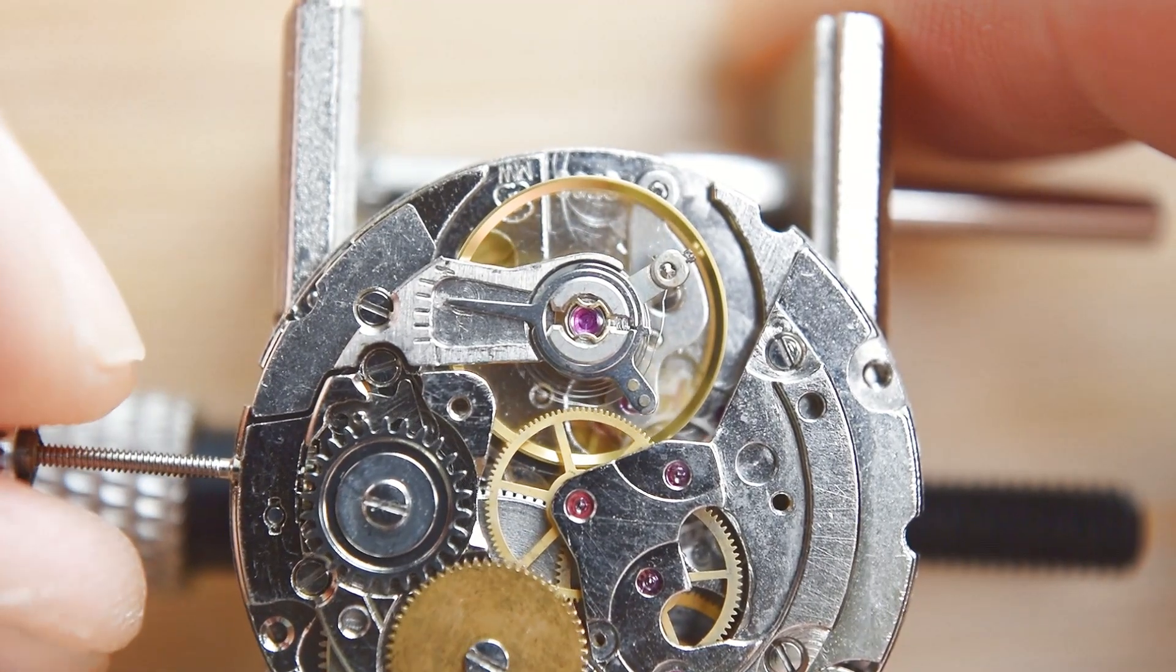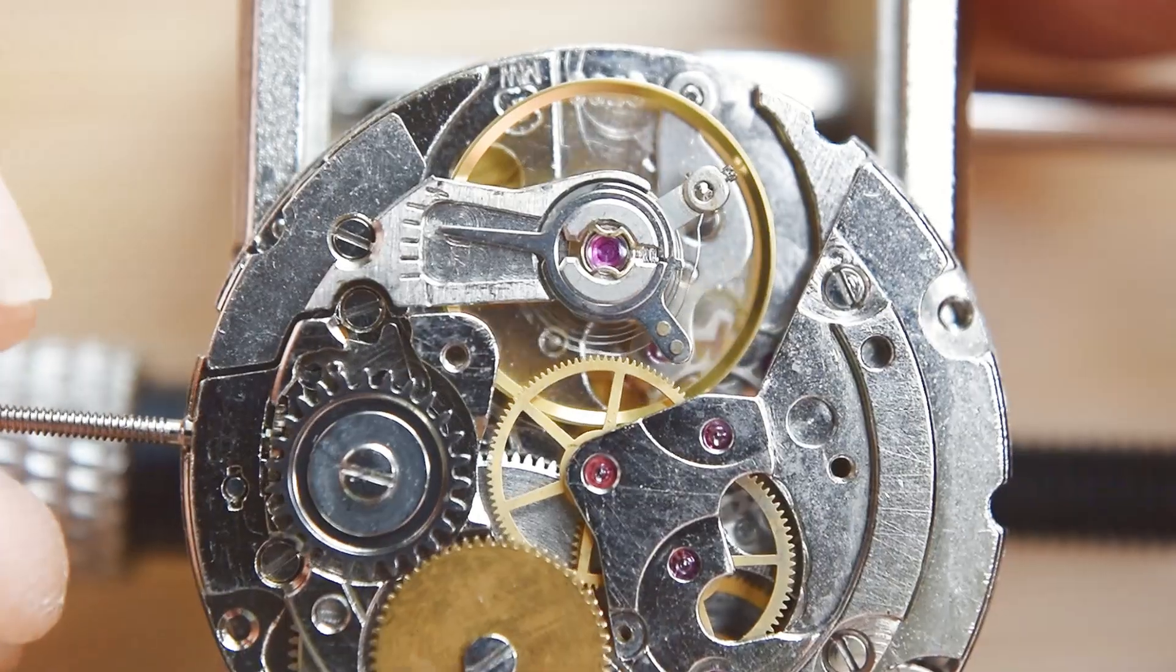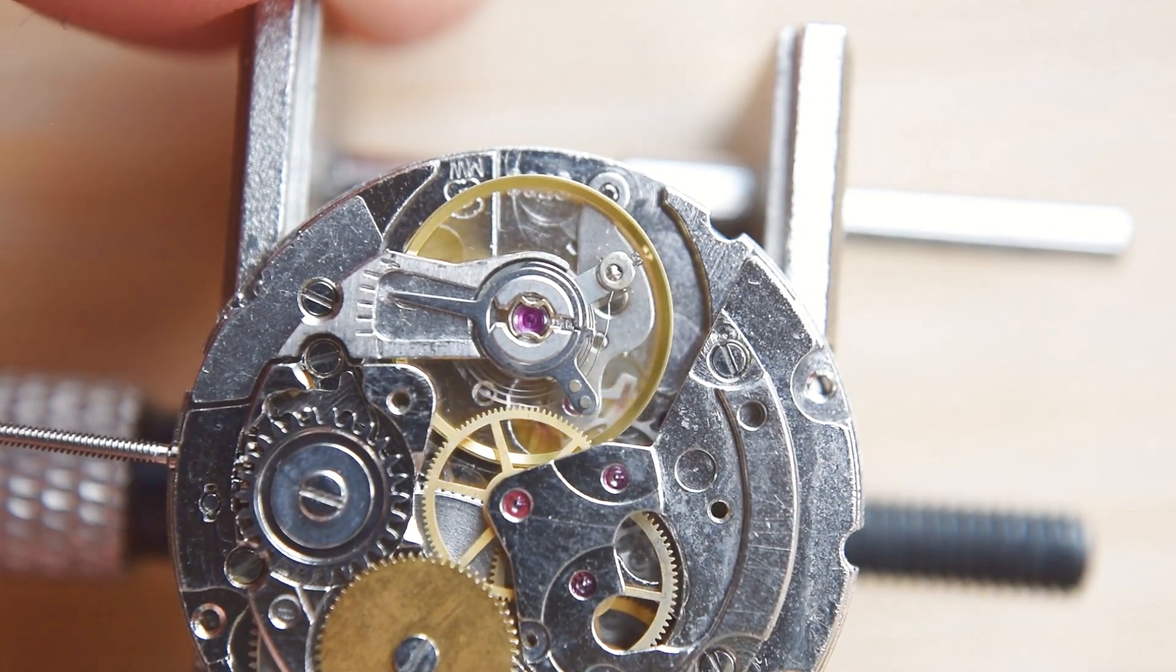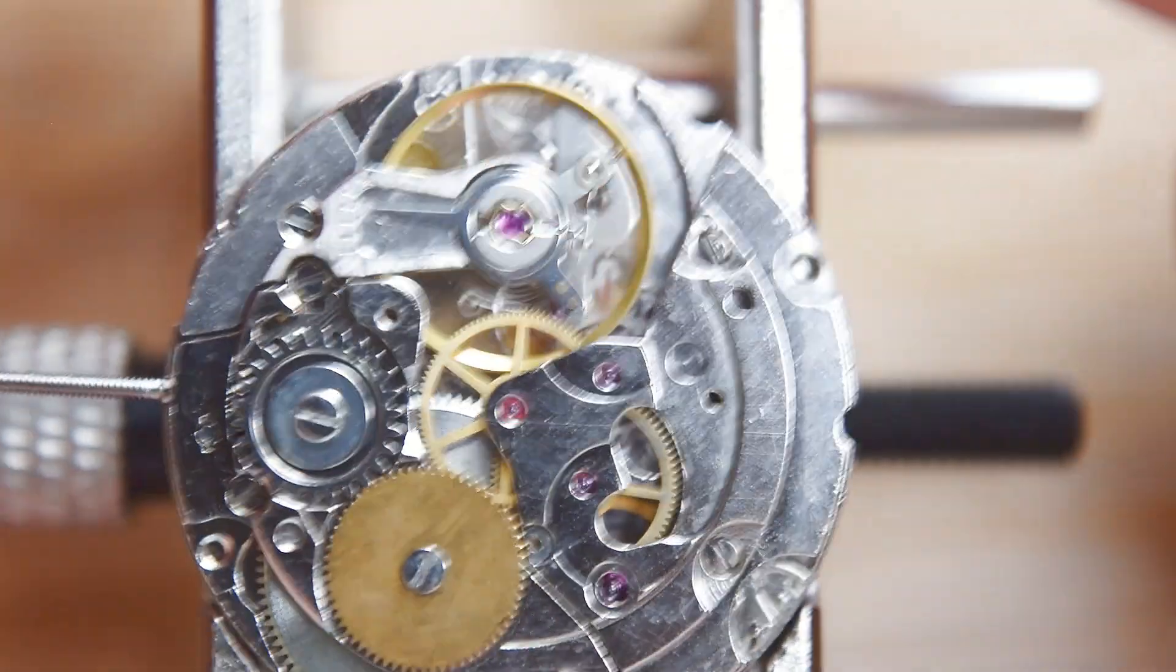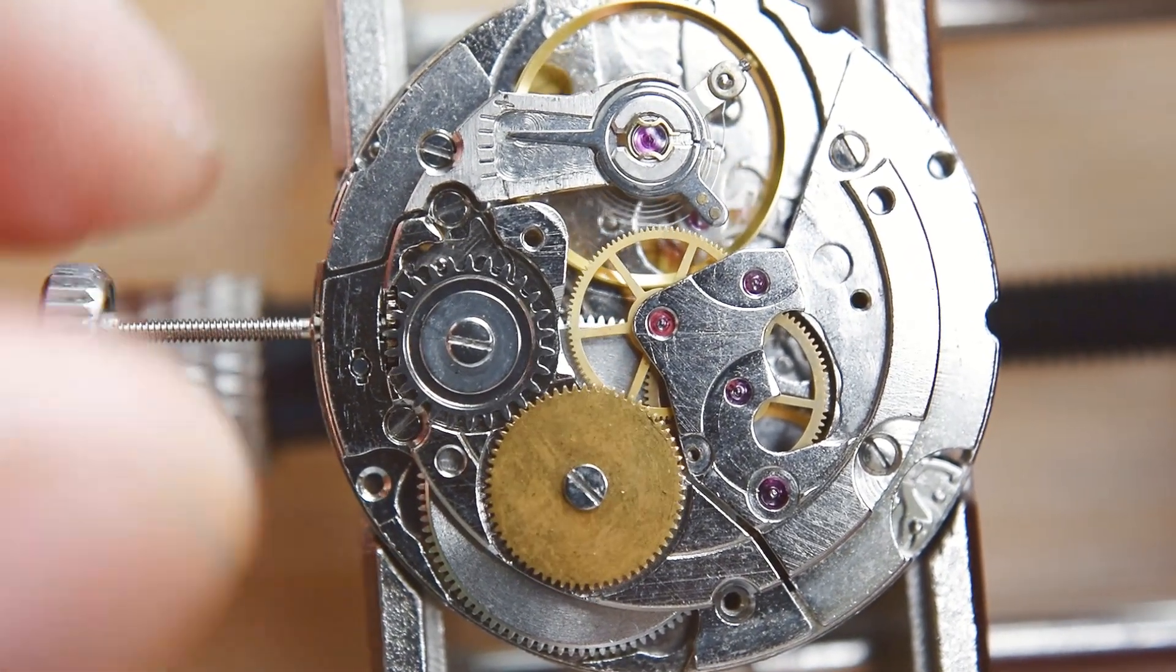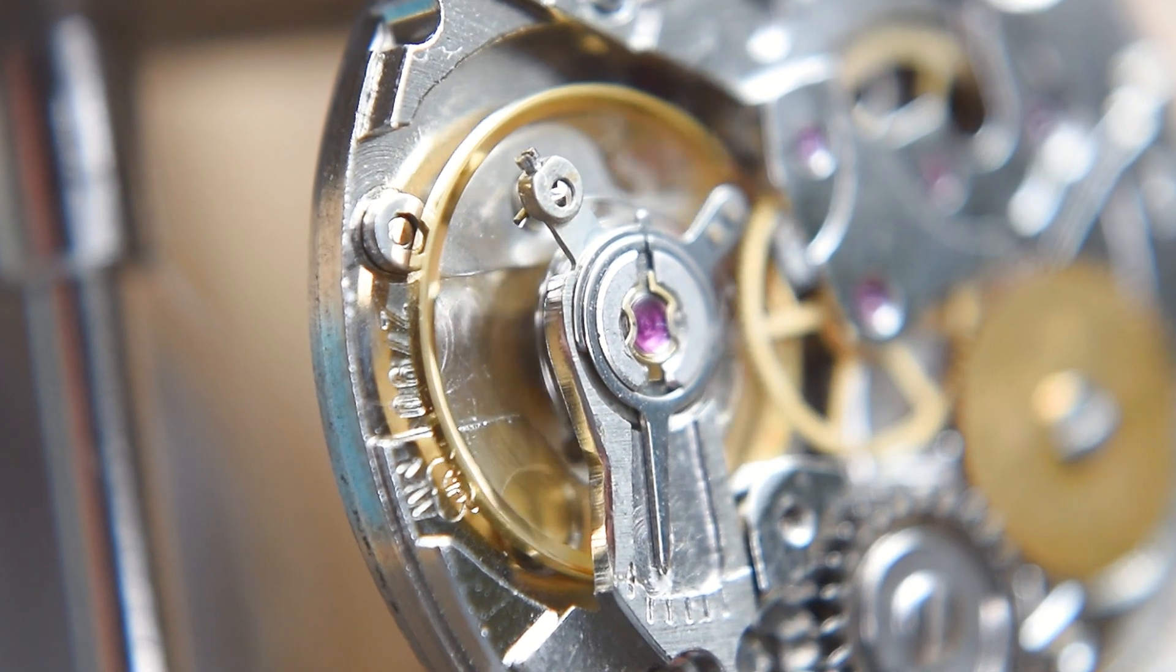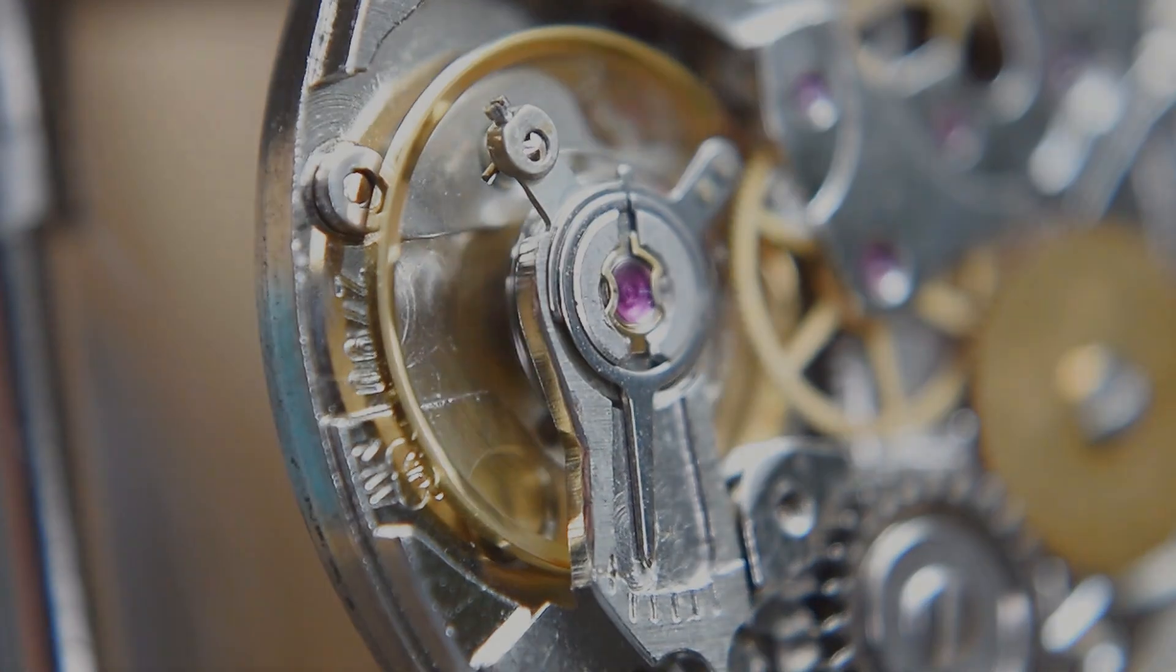That was the ETA 2790, quite interesting movement, a little bit complicated. Quite a lot of complications here. We had a double date, stop second. Not very easy. I wouldn't recommend it for your first watch service. I have other videos where I am showing you what you rather should choose. That was the ETA 2790. I hope you enjoyed this video. Thanks for watching. If you like this type of content, subscribe. And I hope to see you again in my next video. Take care. Bye bye.